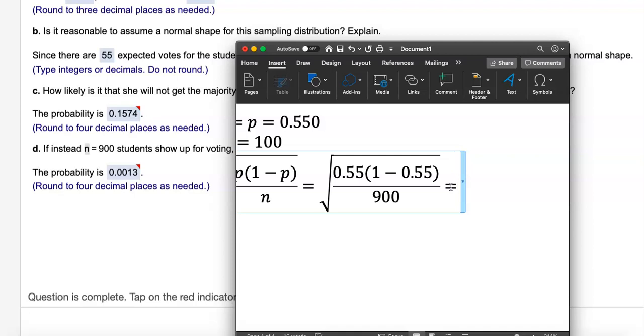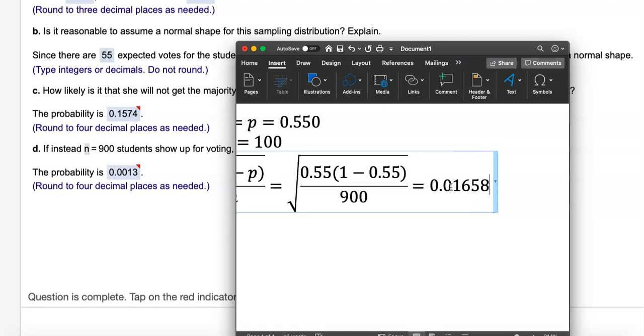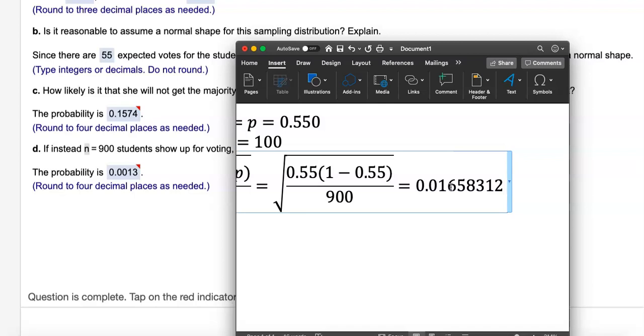I'm gonna go ahead and type this in my calculator. Type in square root of 0.55 times 1 minus 0.55 and go down to the bottom of the fraction and put 900 there for the new sample size. The standard deviation is 0.016583. The reason I wrote so much is because I just didn't want to round it in the middle of a problem. They wanted the final answer to be rounded to four decimal places.